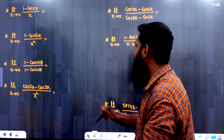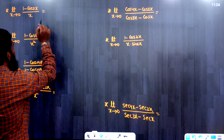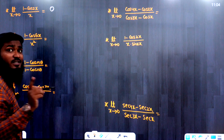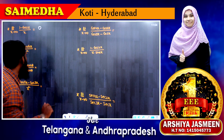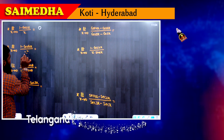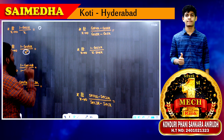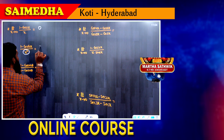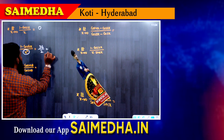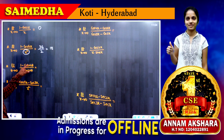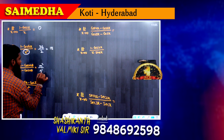Now let us solve questions using these shortcuts. Question 1: limit x→0 of (1 − cos2x)/x. Denominator is x, so the answer is directly 0. Question 2: limit x→0 of (1 − cos6x)/x². Denominator is x², so answer = a²/2 = 6²/2 = 36/2 = 18. Question 3: limit x→0 of (1 − cos mθ)/(1 − cos nθ) = m²/n².